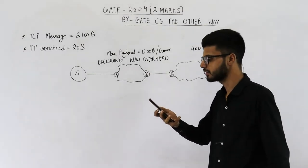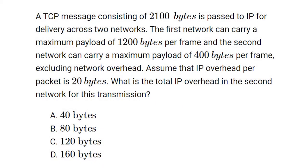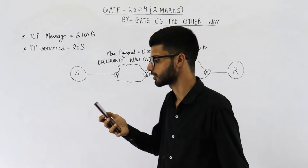Have a look at the statement. It reads: a TCP message consisting of 2100 bytes is passed to IP for delivery across two networks. The first network can carry a maximum payload of 1200 bytes per frame, and the second network can carry a maximum payload of 400 bytes per frame, excluding network overhead. Assume that IP overhead per packet is 20 bytes. What is the total IP overhead in the second network for this transmission?